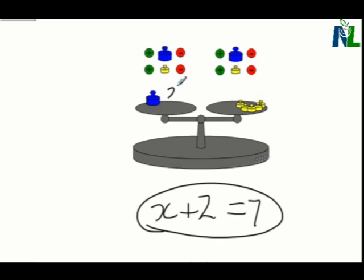So our answer is x equals, and if we count up all of our yellow, we have 5.